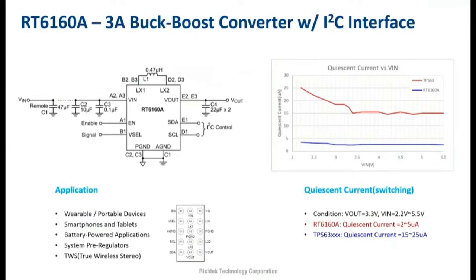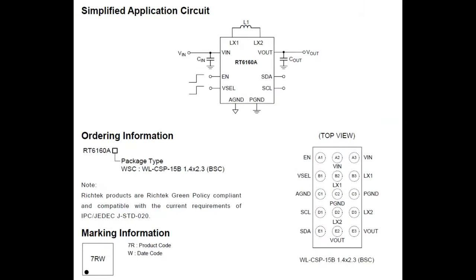And then compare it to the TPS series. The quiescent current here is two to five microamps compared to 15 to 25. So for deep sleep, it's going to make a really big difference.